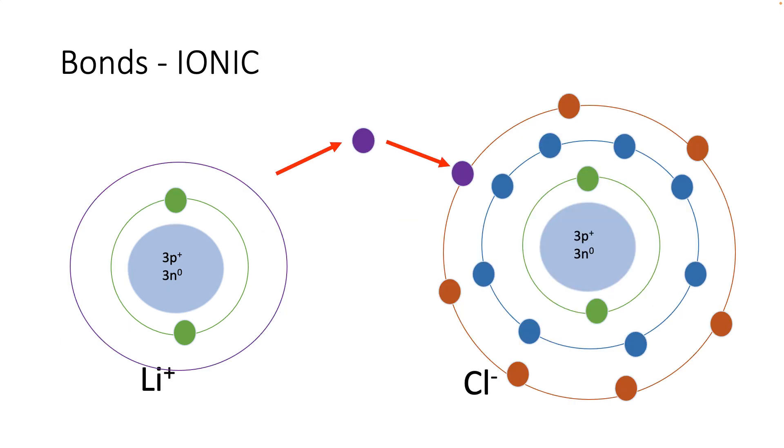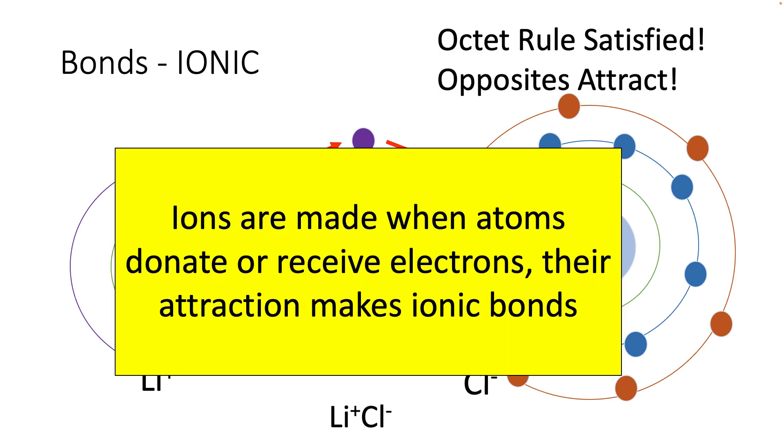So lithium and chloride both satisfy the octet rule if lithium donates an electron and chloride receives an electron. Now they're both charged. And because they have opposite charges, they are attracted to one another.